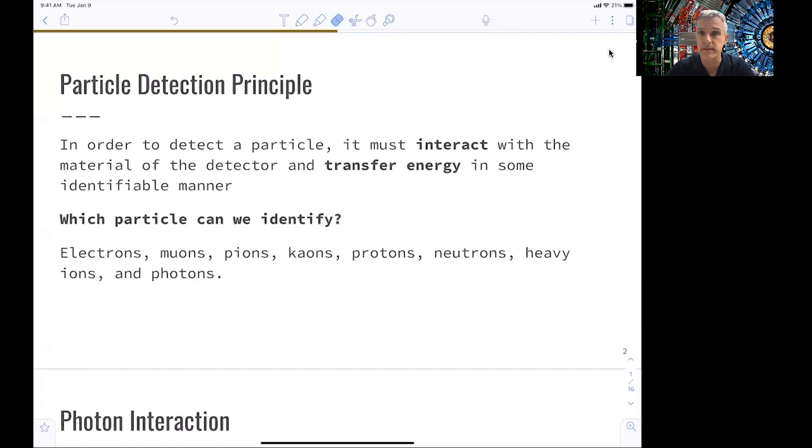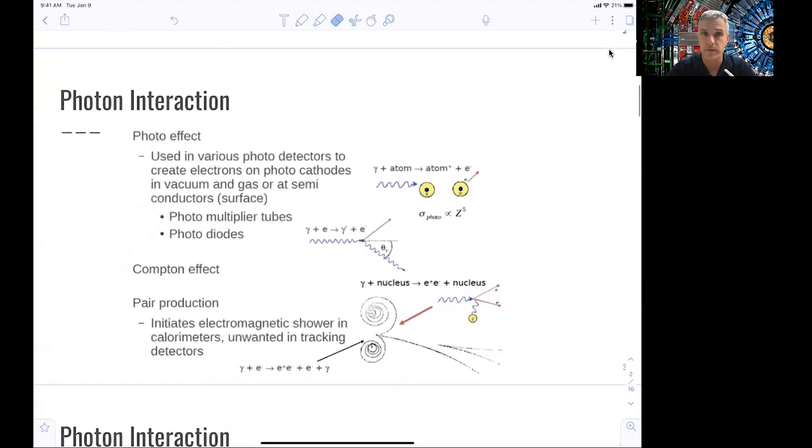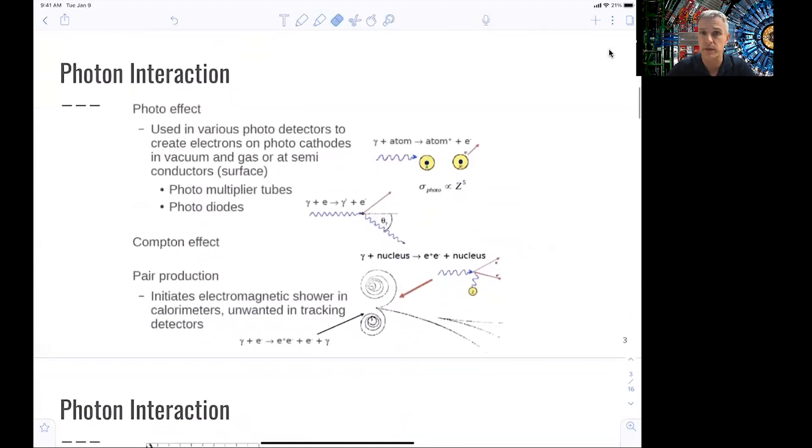So we will split this discussion up in the interaction of neutral particles and charged particles, and we start with the photon. The photon interacts with detector material via three leading effects: the photo effect, Compton scattering, and pair production.